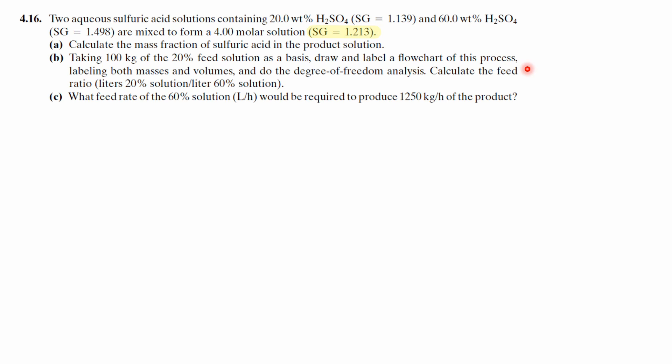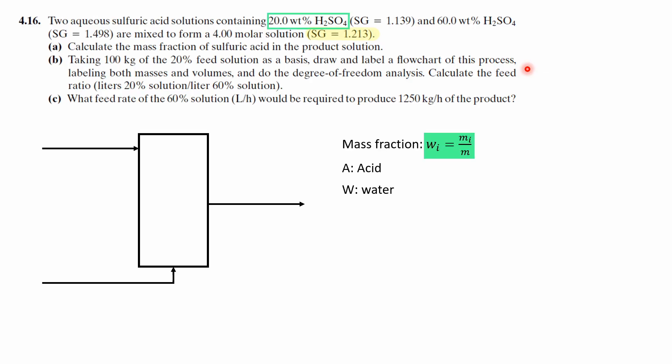Assuming you've tried it out for a bit we can start by labeling the process flow diagram. We have our system with two inflows and one outflow as a product. Now we can begin to label this by making a feed stream with the mass fraction denoted as W for the mass fraction of species. And I'll use A for acid and W for water.